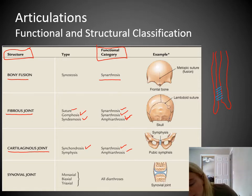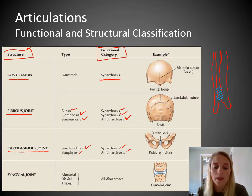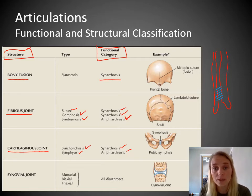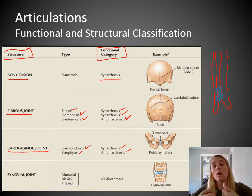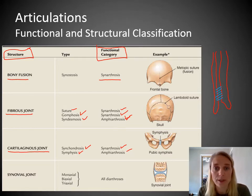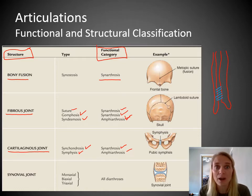The next one is called a symphysis. A symphysis joint is again a wedge of cartilage, but in this case it's amphiarthrotic. The example shown is the pubic symphysis — between the two pubic bones there's a little wedge of cartilage, and it allows for a little bit of movement between your left and right hip bones. It gets more flexible in pregnant women, as hormones loosen it up, helping to widen the birth canal a little bit.